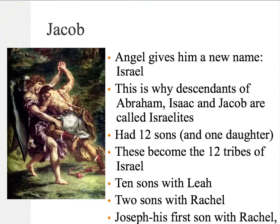There are many interesting stories that surround Jacob, but one of the most interesting is a story in which Jacob wrestles an angel all night and never gives up. At the end of the night, the angel gives Jacob a new name — the name of Israel. This is why the descendants of Abraham, Isaac, and Jacob are known as the Israelites, the followers of the patriarchs.